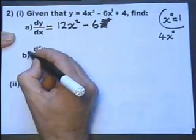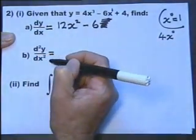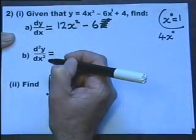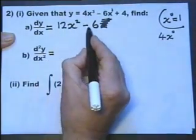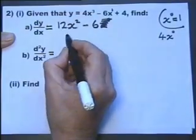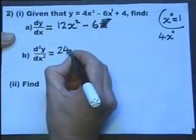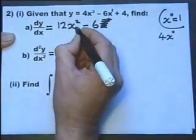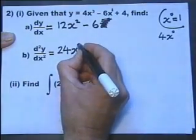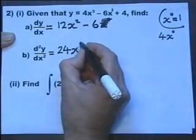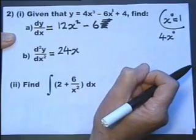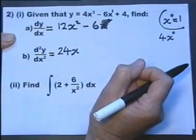d²y/dx² is saying find the second differential — in other words, differentiate this again. So we go 2 times 12 is 24, drop that down 1 power to x to the power of 1, and there's no need to write the power of 1. Differentiate the minus 6, and that disappears.